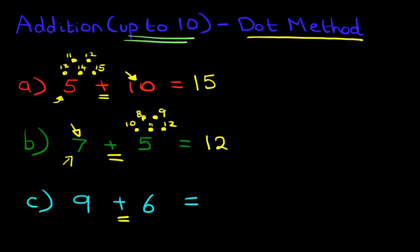Which number is larger? 9 is bigger than 6. So we're going to put dots above the smaller number, which is 6. How many dots? Well it's 6 dots. The number 6 has got 6 dots. 1, 2, 3, 4, 5, 6.